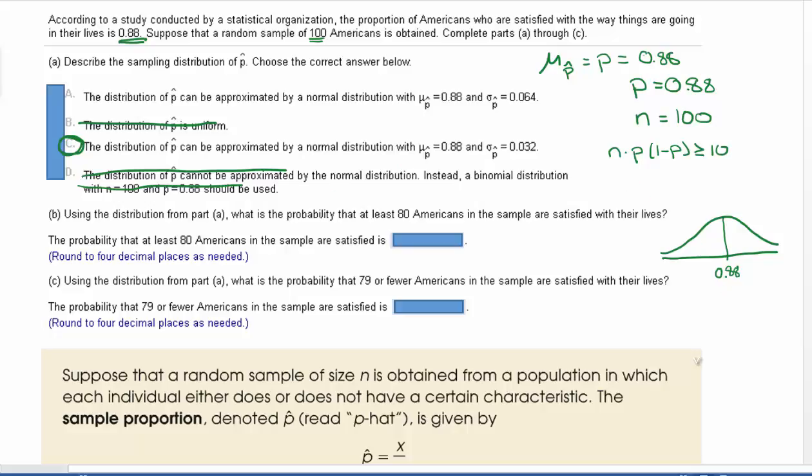We are wanting to find the probability that at least 80 Americans in the sample are satisfied with their lives. Well, 80 and 0.88, these don't really go together. The 80 is going to be used for us to find a p-hat. So for part B, p-hat is going to be 80 over n, which is our sample size of 100. That's just going to be 0.8.